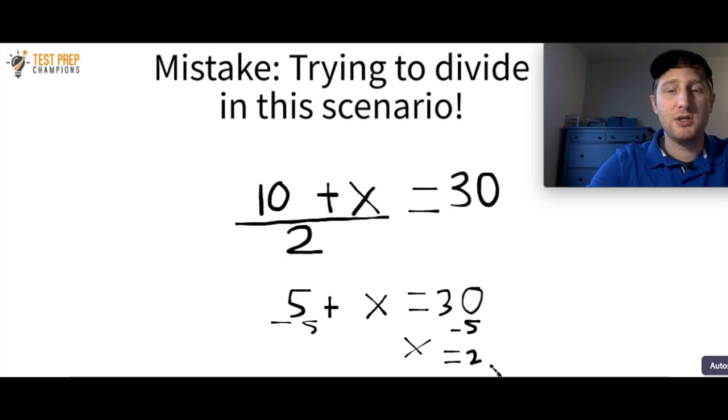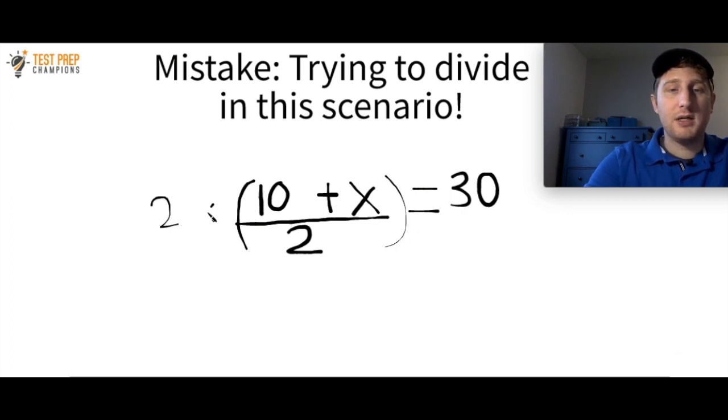So what you want to do, or at least I think the fastest way to do it is actually to multiply both sides by 2. And we multiply both sides by 2 here. And let me rewrite this question. So I would now have 10 plus x equals 60. All right, and now what I can do is I can subtract 10 from both sides of the equation here. And I would find out that the correct answer is x equals 50.